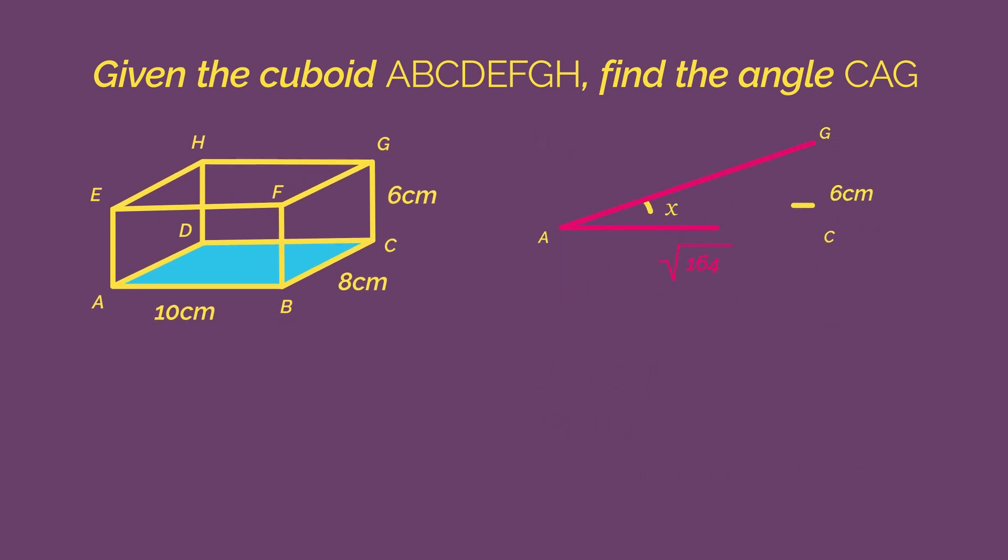So now that we know the length of AC, we can go back to the actual question. And we're now able to find the size of angle X using SOHCAHTOA. 25.1 degrees.